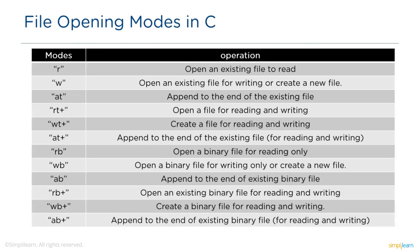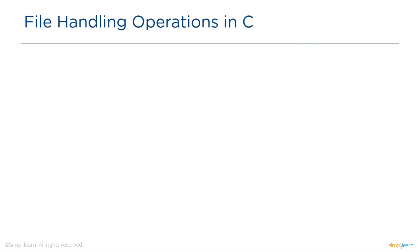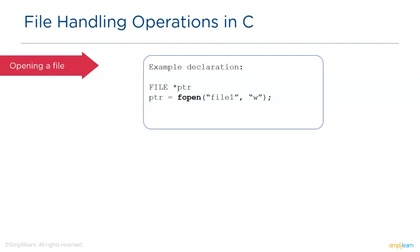Now let's look at the declarations showing how functions and modes are used in file handling. For the file opening operation, the declaration is FILE* followed by the file pointer name. The pointer variable will contain the address of the file structure. To perform any operation on the file, we must open it using the fopen function, assigned to a file pointer variable, specifying the filename and the mode. In this example, the file is opened to perform the write operation.